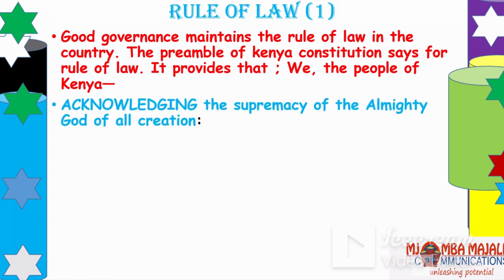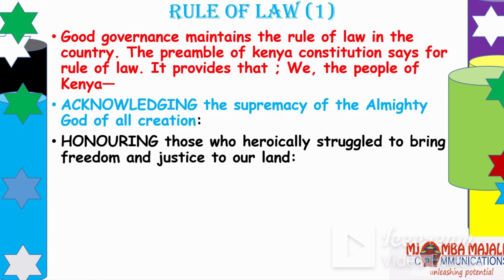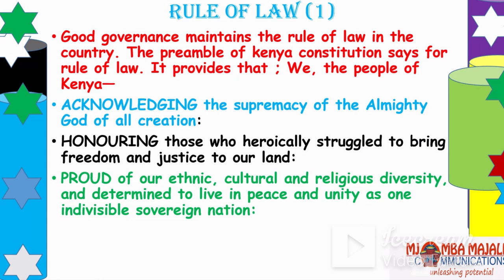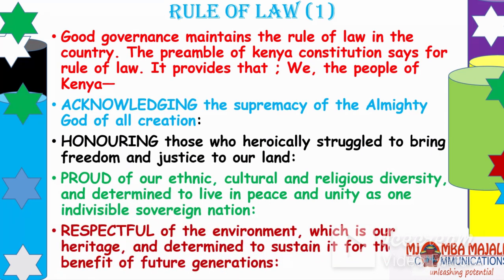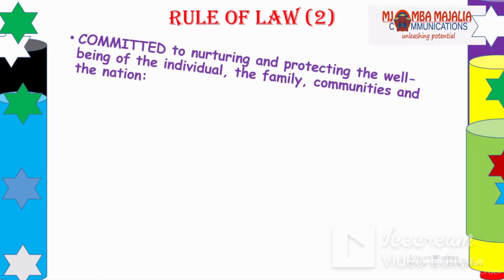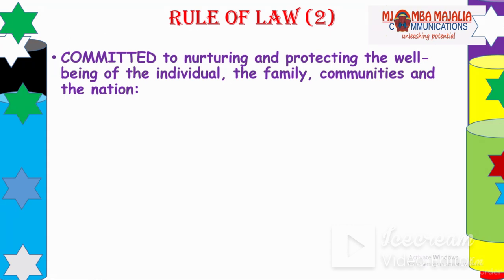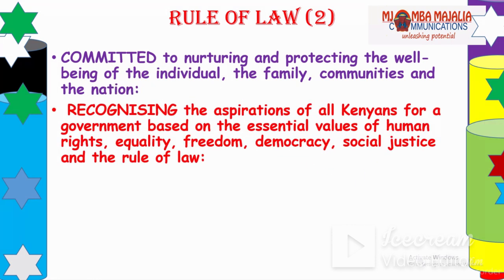The rule of law: good governance maintains the rule of law. The preamble of the Kenya Constitution provides for the rule of law. The people of Kenya acknowledge the supremacy of the Almighty God, honor those who struggled to bring freedom and justice, are proud of ethnic, cultural, and religious diversity, determined to live in peace and unity as one indivisible sovereign nation, and respectful of the environment. The preamble also commits to nurturing the well-being of individuals, families, communities, and the nation.